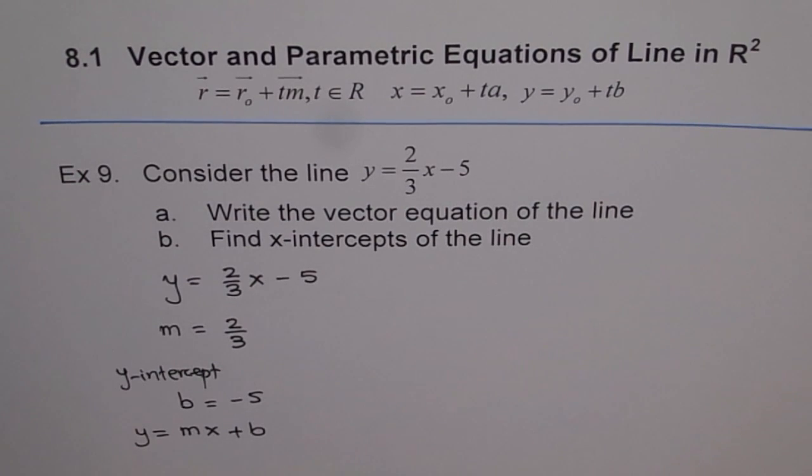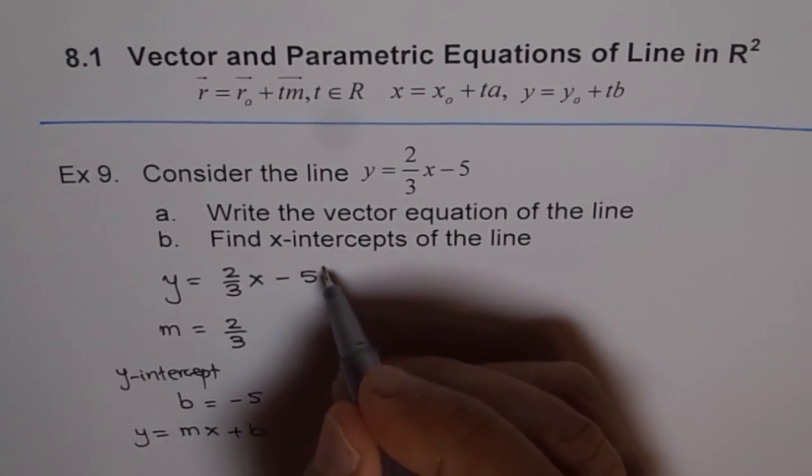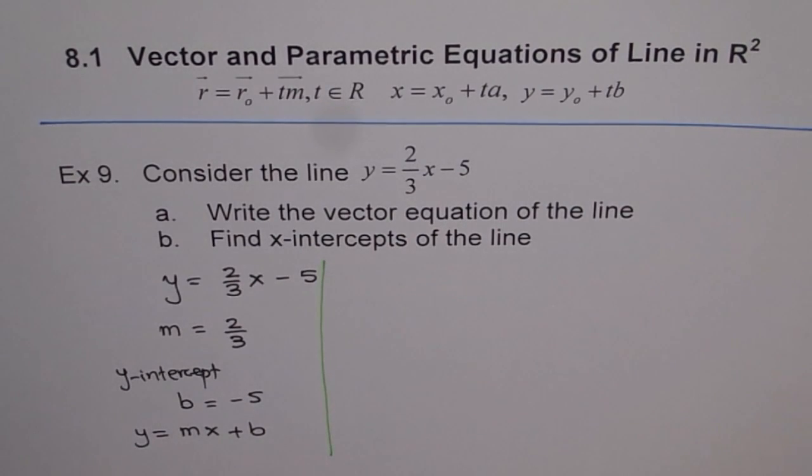When I am saying b and m, I am trying to relate it with slope-intercept form which is y equals mx plus b, correct? This is what we had been learning about line so far in algebra. Now we are connecting algebra with our vector equation and that's the whole exercise.